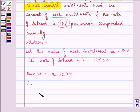We have a formula to find the installment: A = (100P/r) × [1 - (1 + r/100)^(-n)]